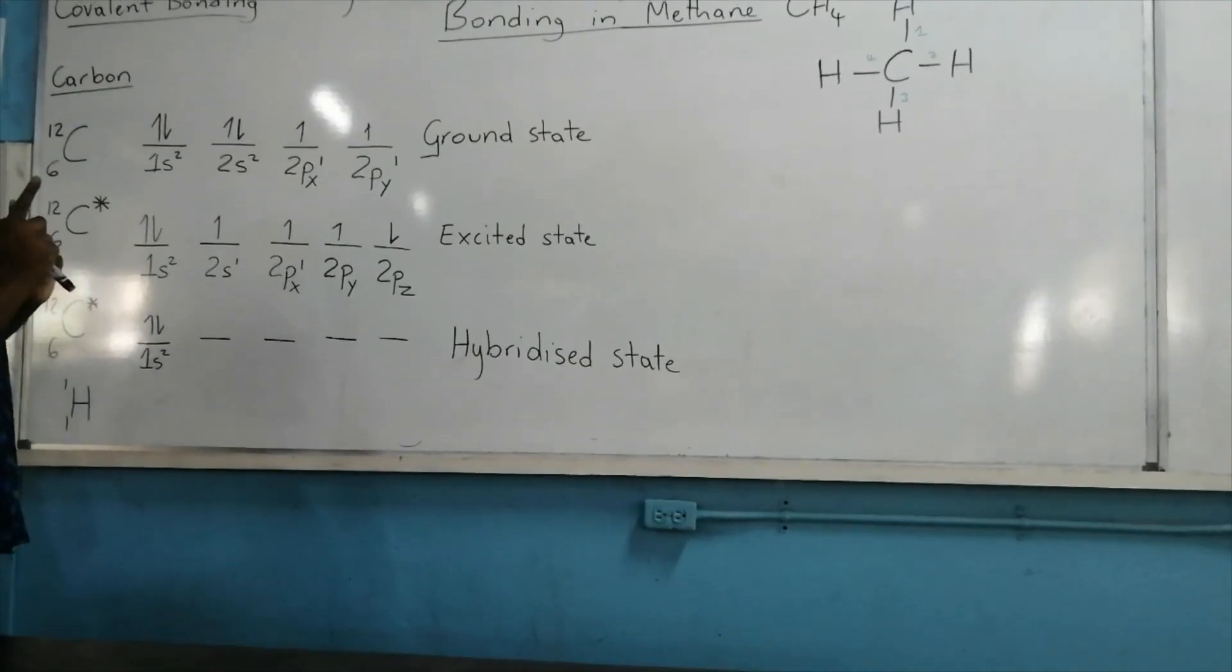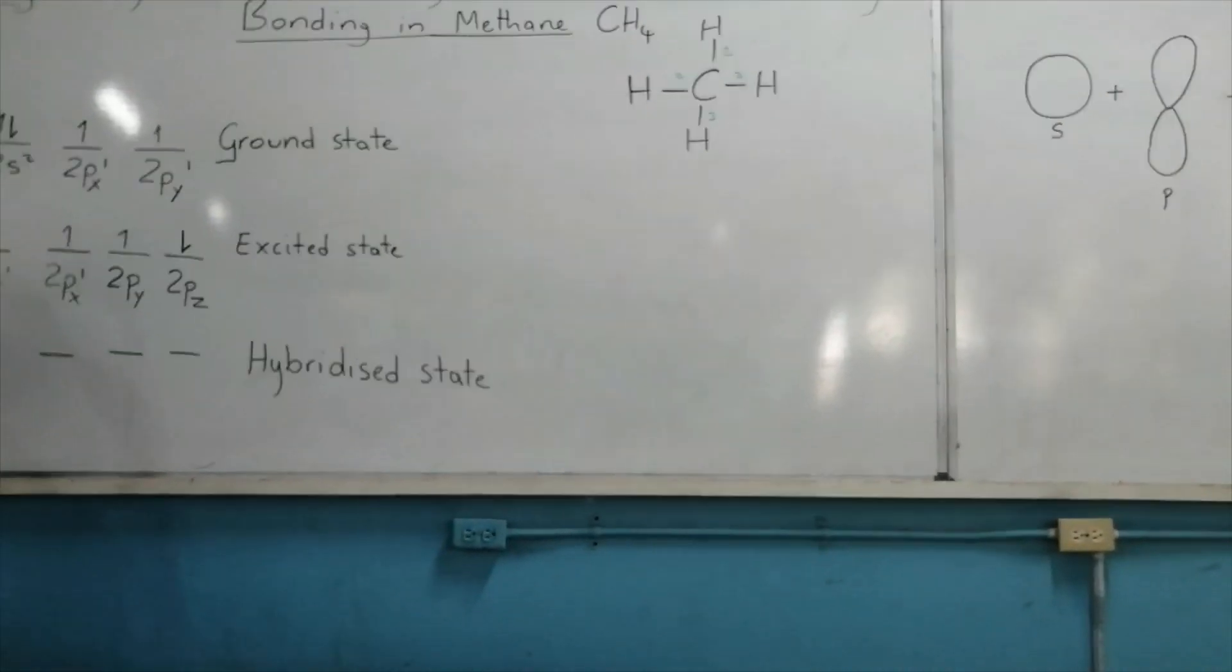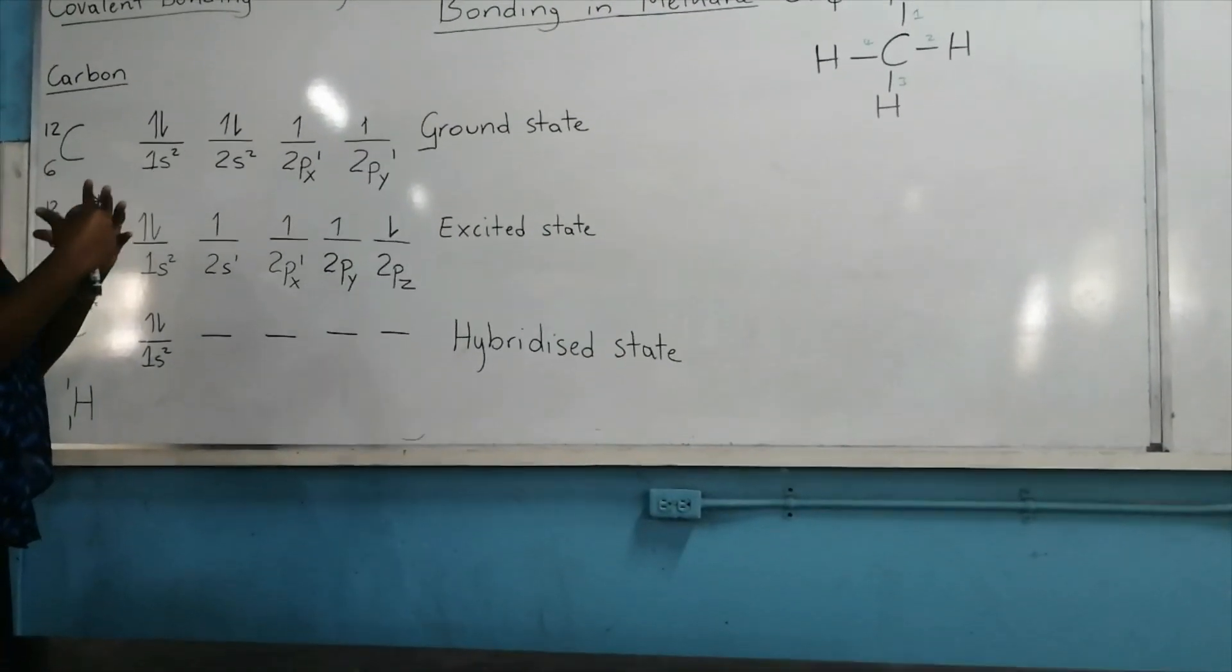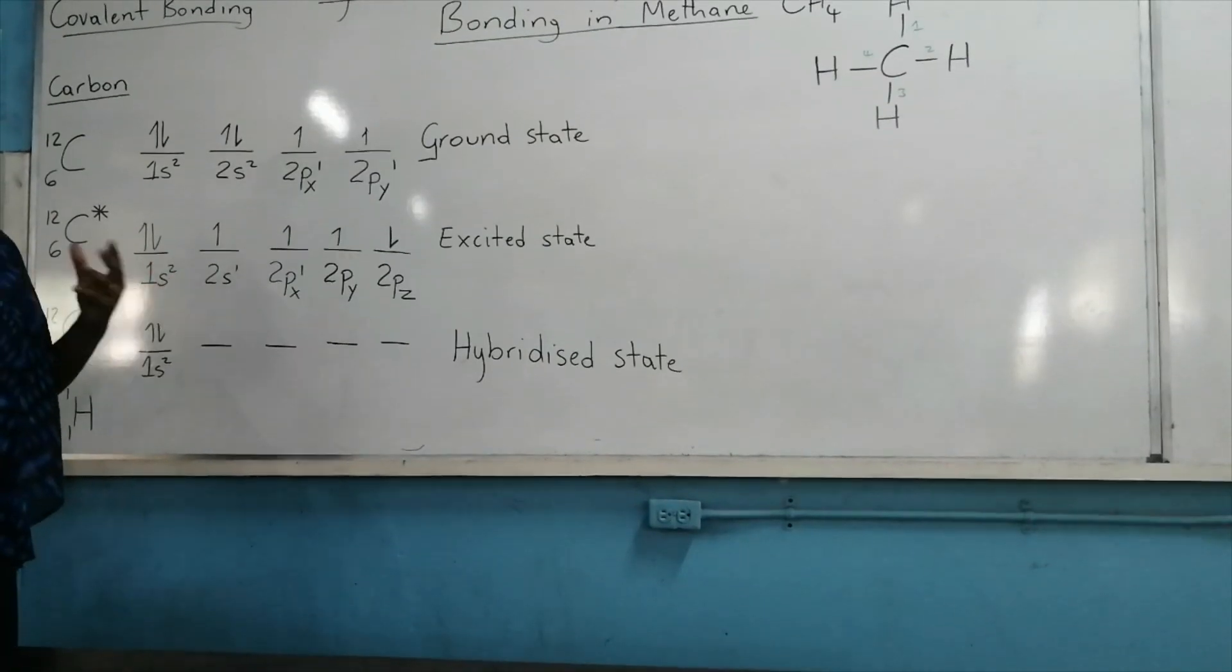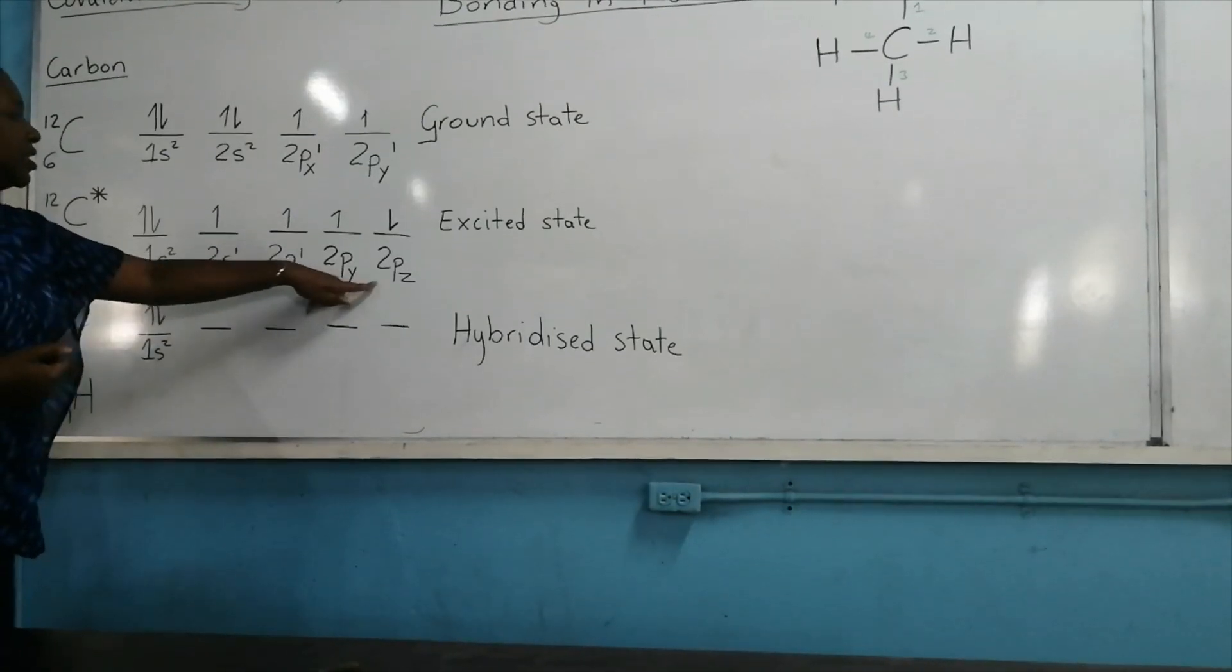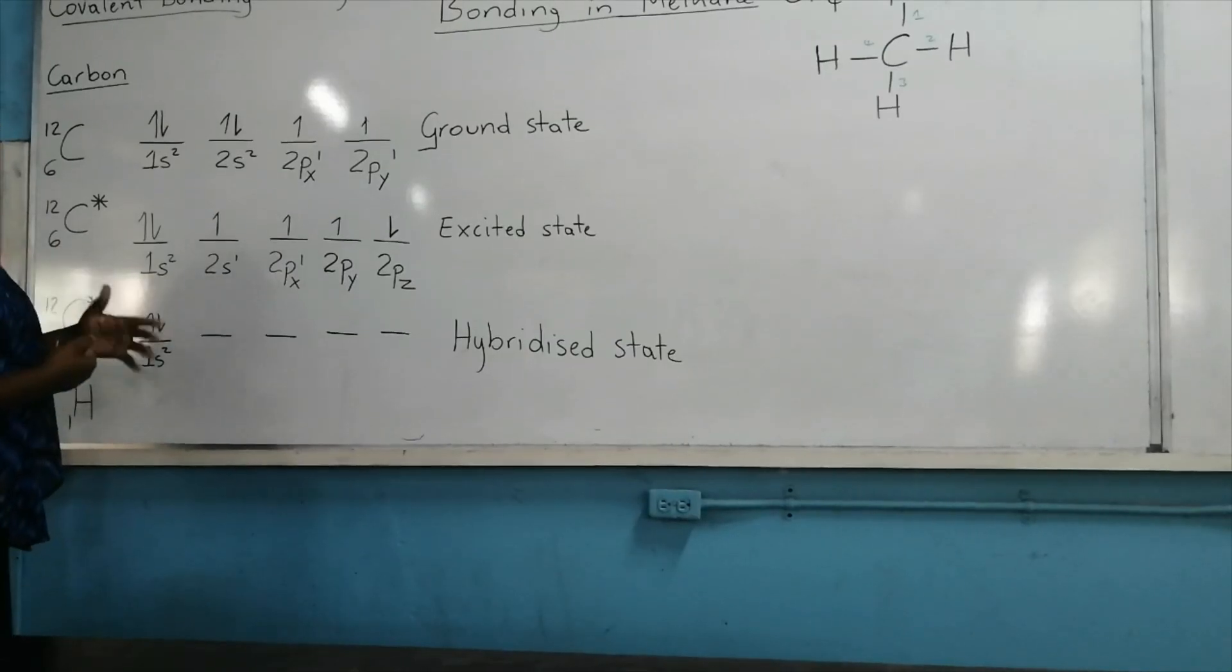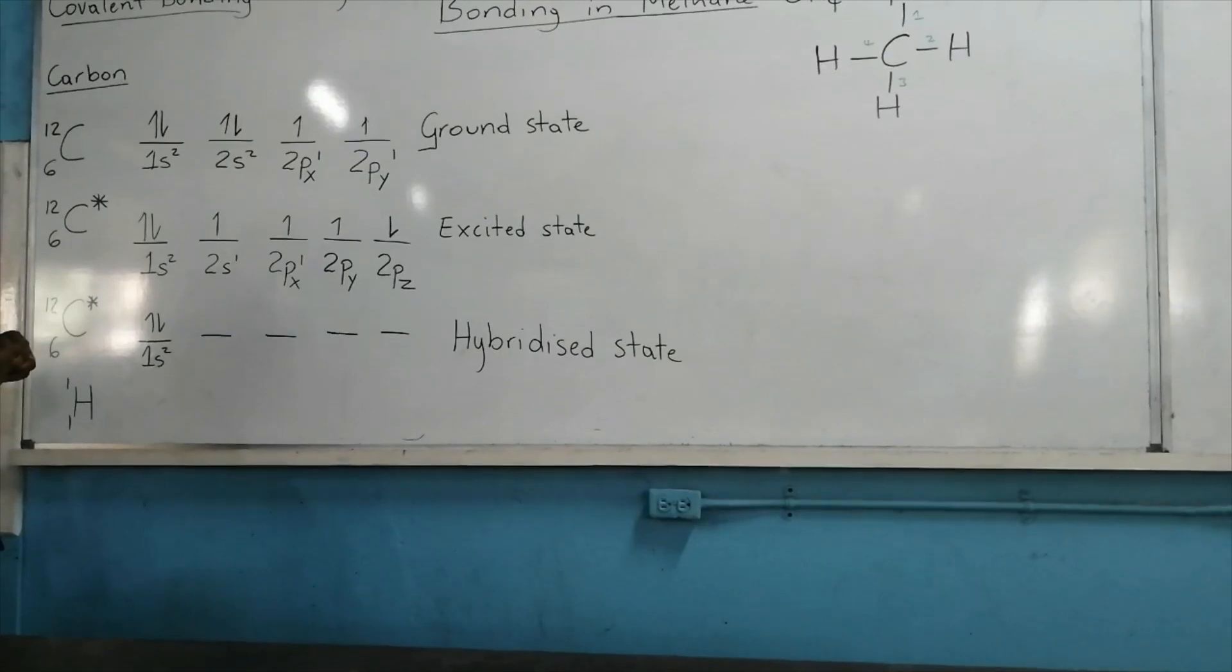So what happens now, it is energetically unstable for the atom to have the s orbitals and p orbitals separate in the second energy level. So what it does is just merge all of those two different types of orbitals, and it creates new atomic orbitals called sp3 hybridized atomic orbitals. Because there are three p orbitals merging with one s orbital, the hybridized atomic orbitals that would be formed in methane would be sp3 hybridized atomic orbitals.